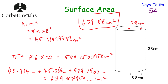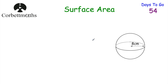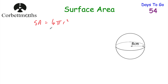So that's the surface area of a cylinder. Now let's look at the surface area of a sphere. The surface area of a sphere is found by 4 pi r squared — that's given to you so you don't need to learn it off by heart. So find the surface area of this sphere which has a radius of 8 centimetres.